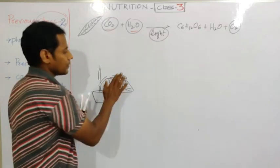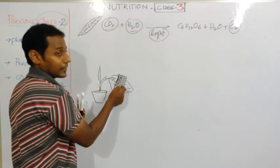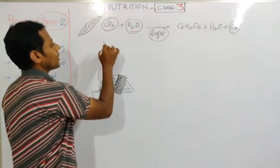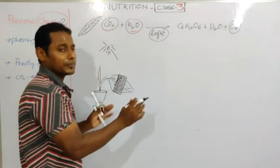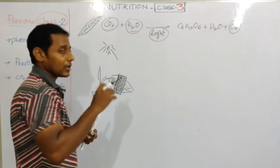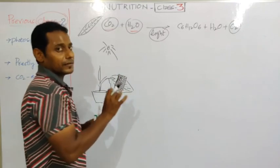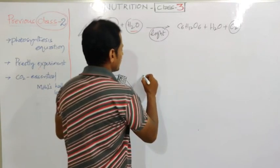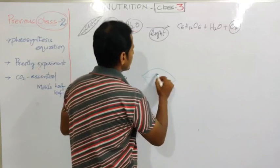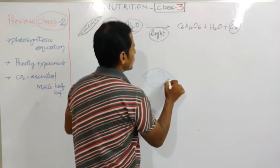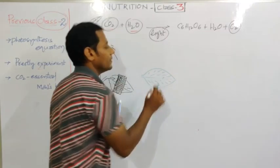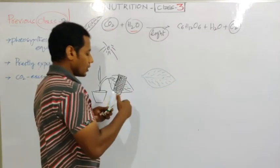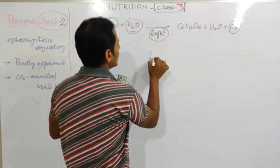You just keep a plaster or tape to hold the black paper firmly on the leaf. Then keep this whole setup in the sunlight for two to four hours. After two to four hours, you just detach this leaf from the plant. Then, as we learned in the first class, we perform the iodine test to check for the presence of starch - the same experiment we did to prove carbon dioxide is essential for photosynthesis.